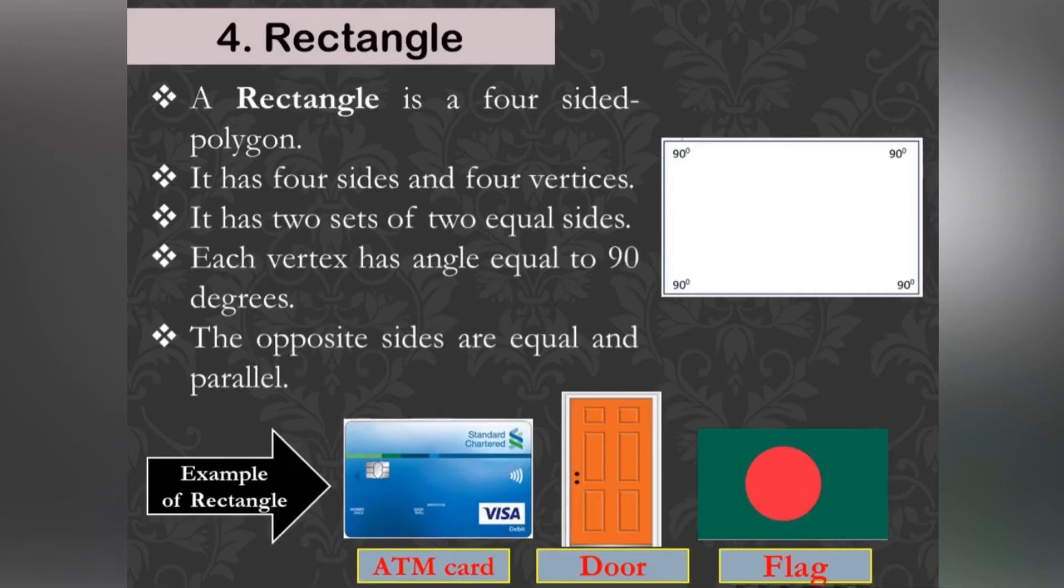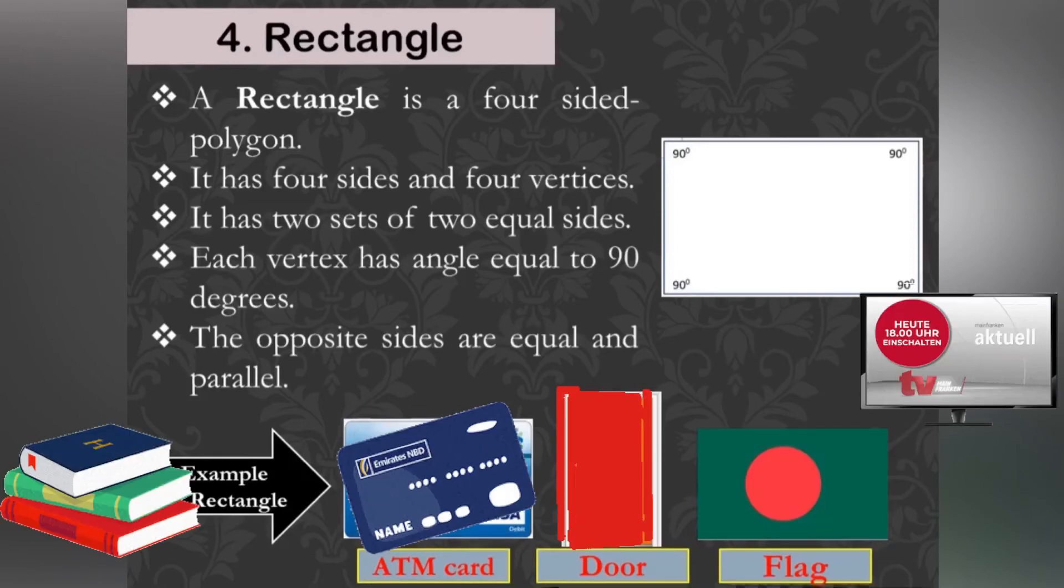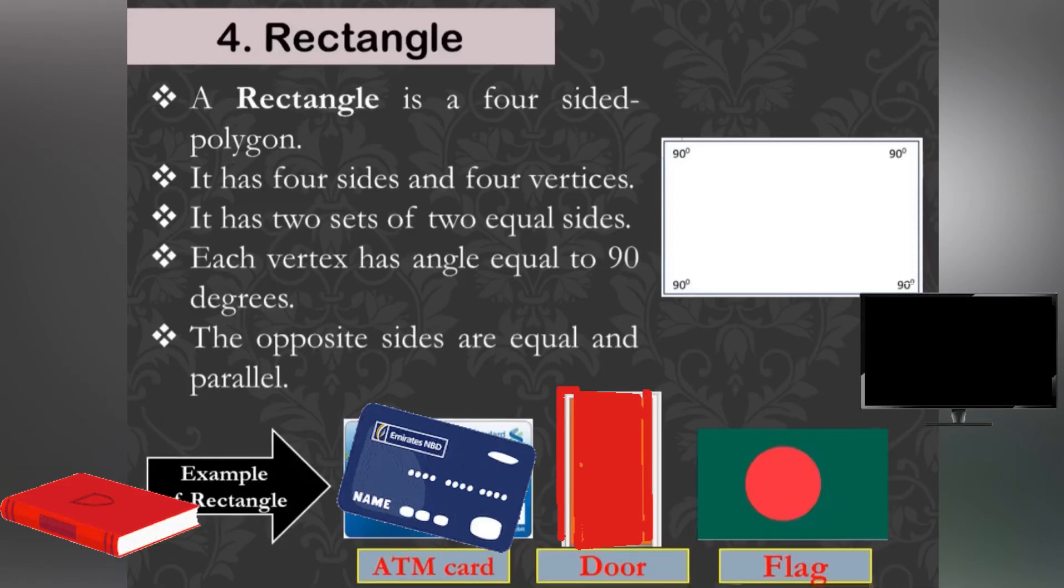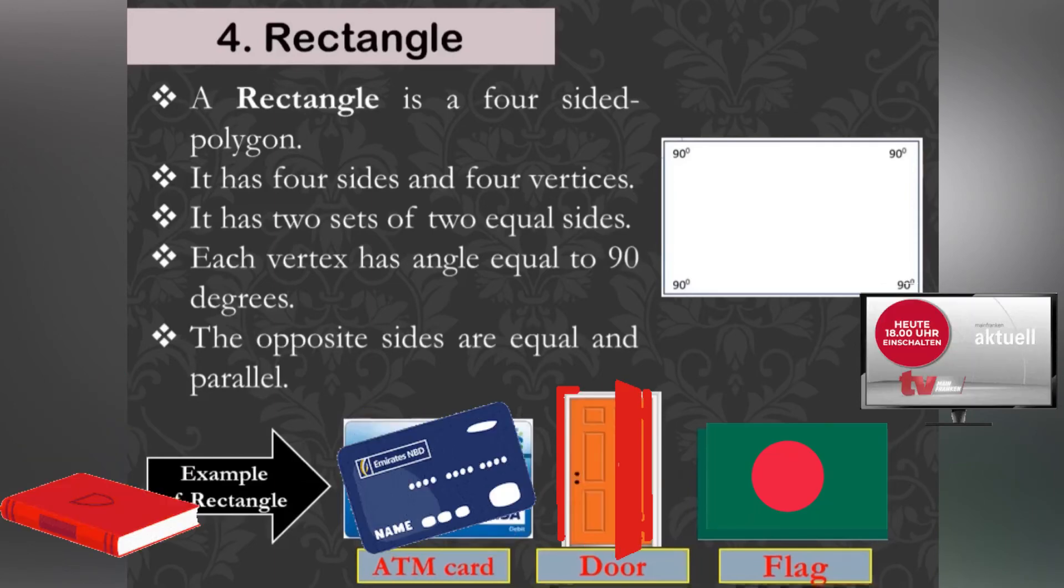The opposite side of a rectangle has the same lengths and are parallel. Examples of rectangle are ATM card, door, LED TV, flag, book, etc.